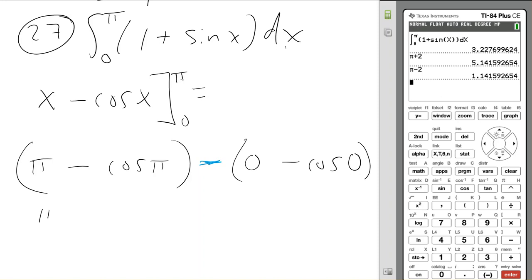All right, well, pi minus cosine of pi. So this is unit circle. This would be negative 1. Minus a negative 1 is like plus 1. This is 0. What's the cosine of 0? Okay, so negative times a negative 1 would be plus 1. So pi plus 2, which is what Jessica gave me in the first place.